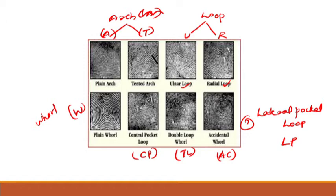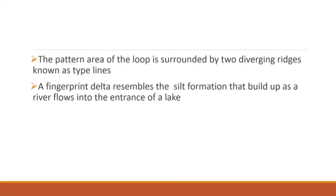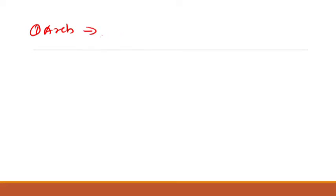Now let us see the definitions of each pattern. First is arch. Arch patterns account for approximately 5% of recorded fingerprints — we can see arches in about 5% of the total population.